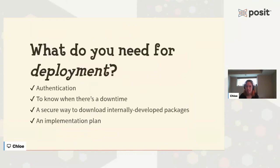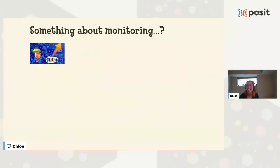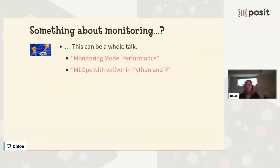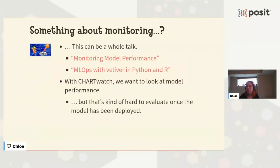The last thing I'll mention for deployment is monitoring. One of the things we want to look at is model performance, but that's difficult once the model has been deployed. Clinicians asked for a target positive predictive value of 0.33 — meaning for every three alarms, at least one should be correct. But that's hard to measure in production. If ChartWatch flags a patient as high risk and they don't deteriorate — they don't transfer to the ICU, they don't die — does that mean the prediction was incorrect? Or does it mean the prediction was correct and clinicians were able to intervene and prevent that outcome?